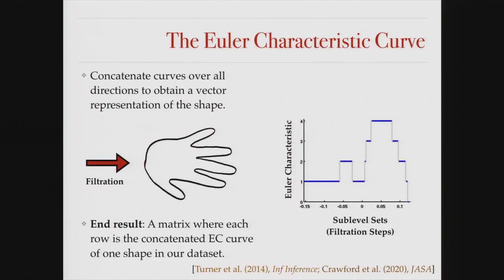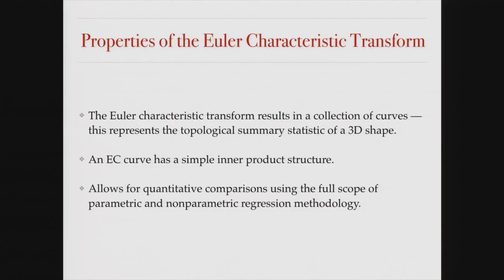Everyone knows what to do with design matrices. Once I have data that's just in vector form, I can do any type of modeling I want. The Euler characteristic gives me a collection of curves to work with. This allows for quantitative comparisons using the full scope of parametric and also non-parametric methodology.